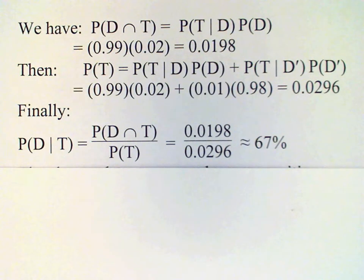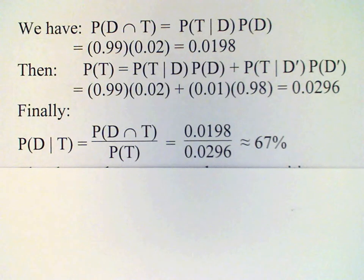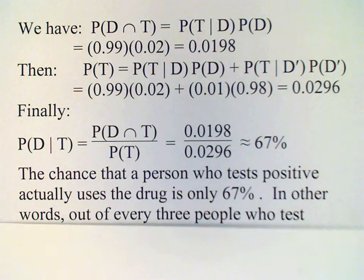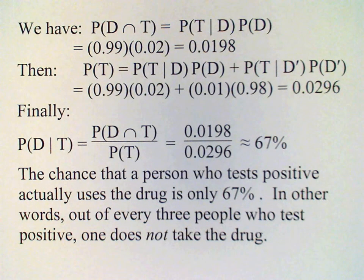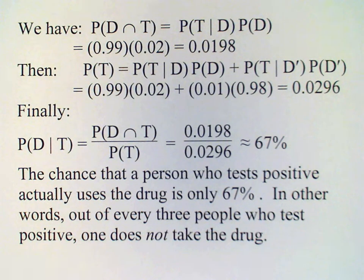This is actually a little disturbing. The probability that a person actually uses the drug given a positive test is only 67%. That means that nearly one out of three people who test positive are not using the drug. The conclusion we draw is that we need to be very careful whenever there is a possibility of a false positive — even if the chance is very low — before concluding that a person must necessarily be taking the drug.